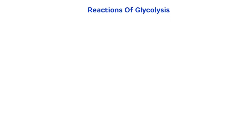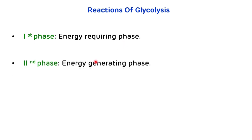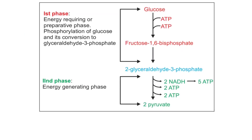Now we will see the steps of glycolysis. The reactions of glycolysis are divided into two phases. The first phase is the energy-requiring or energy-utilizing phase, also called the preparatory phase — that is conversion of glucose up to glyceraldehyde-3-phosphate. The second phase is the energy-generating or ATP-synthesizing phase — conversion of glyceraldehyde-3-phosphate up to pyruvate.